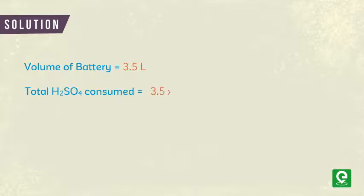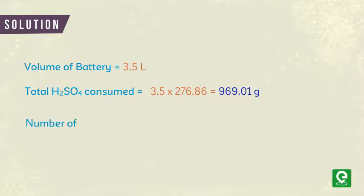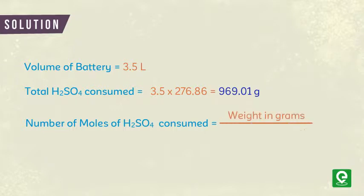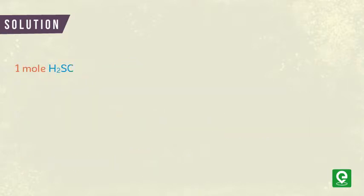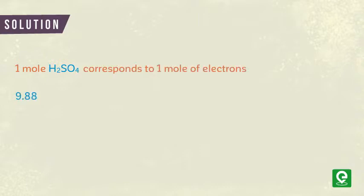The number of moles of sulfuric acid consumed = total mass ÷ molecular weight = 969.01 ÷ 98 = 9.888 moles. Since one mole of H₂SO₄ is associated with the transfer of one mole of electrons, a total of 9.888 moles of electron transfer has occurred.